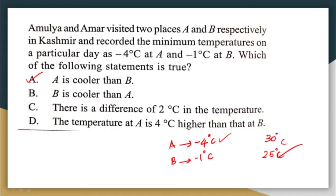B is hotter than A compared to A, so that is the wrong answer. Another option says the difference in temperature is two degrees — that is wrong. The difference between the temperatures of the two places is three degrees, not two.